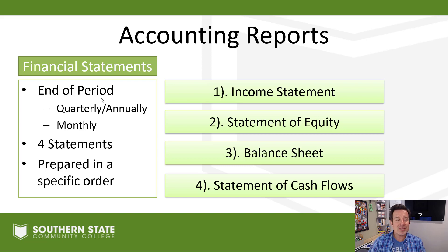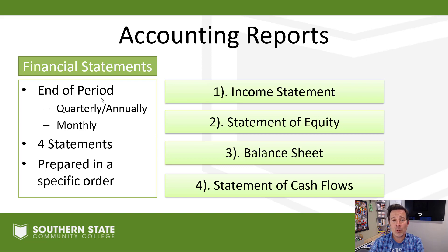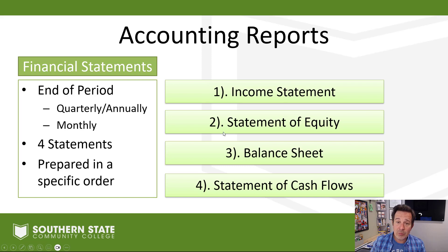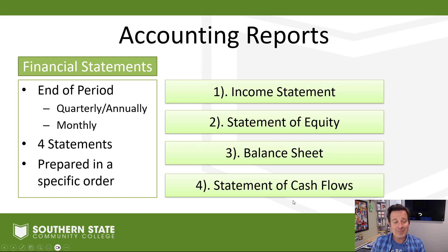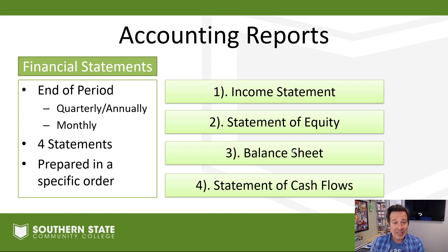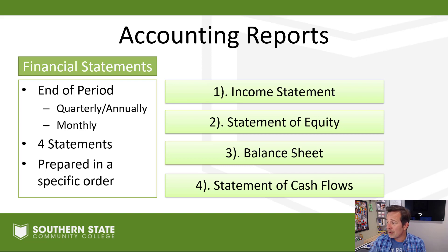Financial statements are going to come in four different flavors. We have four different statements that we make, and we're going to make them in a very specific order so we can make sure they're done correctly. First comes our income statement, then we'll have a statement of equity, then we'll have a balance sheet, and finally a statement of cash flows. Those four statements together are our required financial statements, and each one is going to tell us a different thing and give us a little piece of the puzzle — all very important. They all work together to give us an idea of where the business is at and maybe where it's heading.